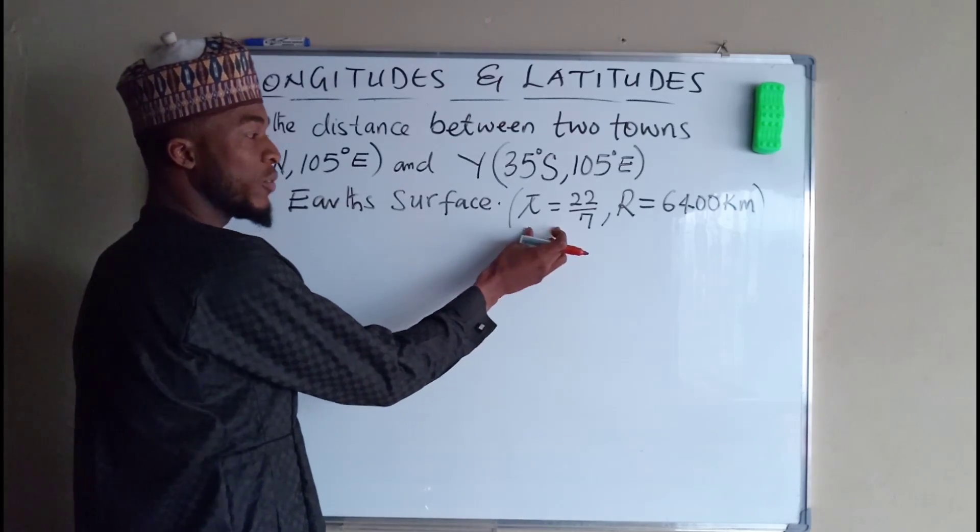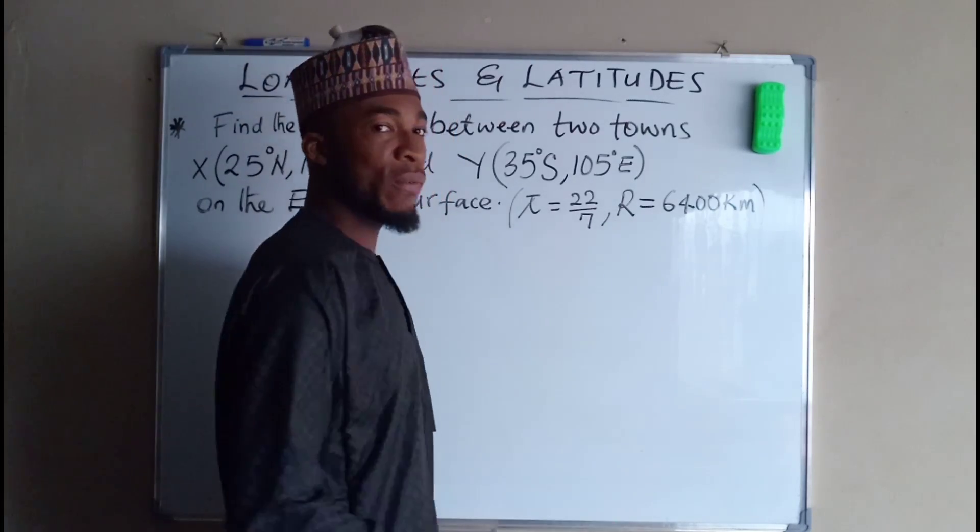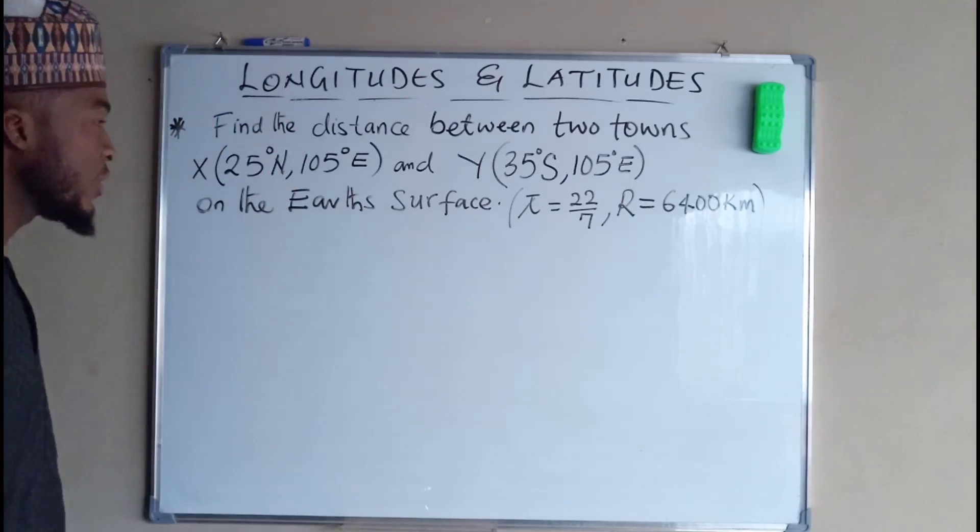We are given pi as 22 over 7 and the radius of the earth as 6400 kilometers.